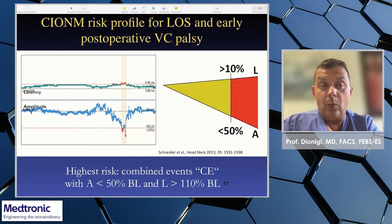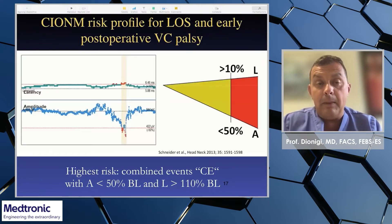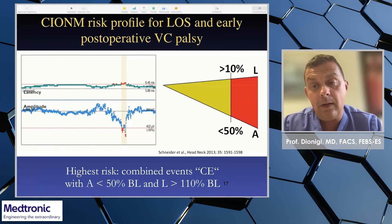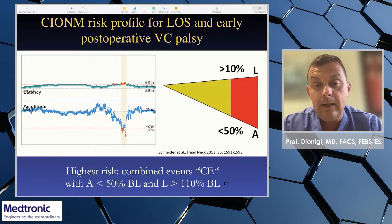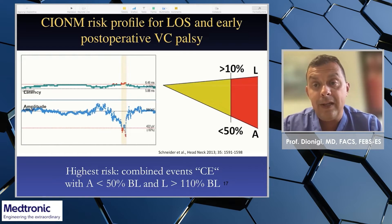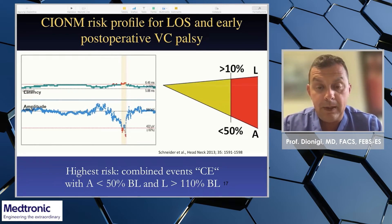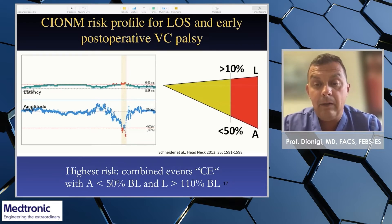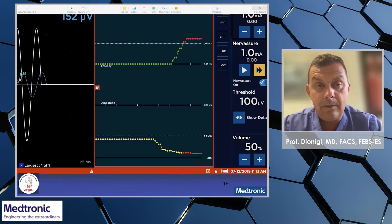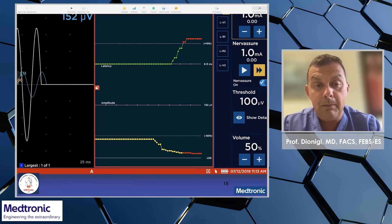During the procedure, we have continuous recording of the latency and amplitude. When there is a decrease of amplitude together with an increase of latency — the so-called combined events — this means the nerve is under risk. When there is an isolated increase of latency or isolated decrease of amplitude, this indicates only a tracker or tube displacement. The highest risk for vocal cord palsy is the combined event of amplitude decrease and latency increase. The nerve assurer displays this with different colors, showing latency increasing on top and amplitude decreasing on the bottom.